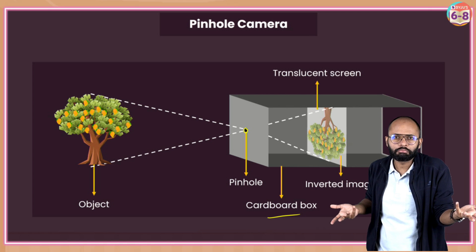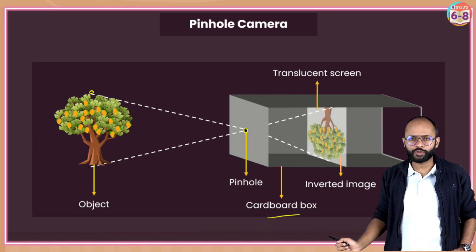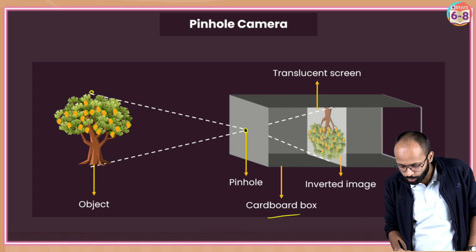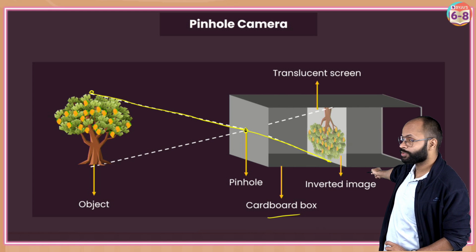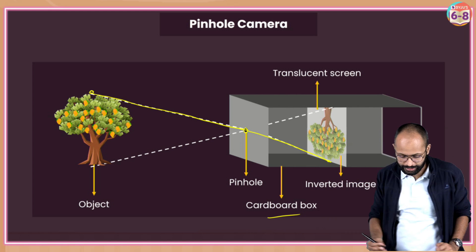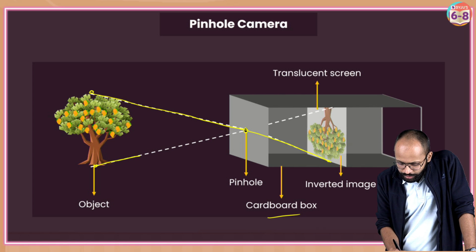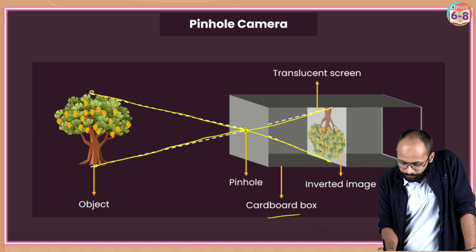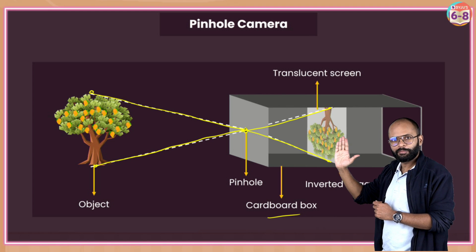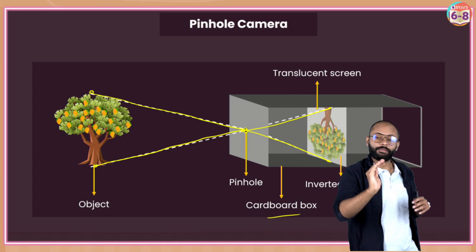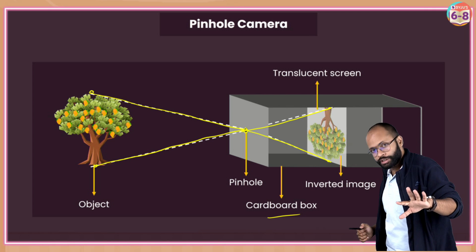What are you trying to see? That is your object - like a tree. The topmost point of the tree: light from that point will go straight, pass through this hole and form an image on the bottom side of the screen. If you take the bottommost point, light is traveling straight through this hole and forms an image on the topmost point of the screen. So the object is like this, but the image is like this - the image is inverted. The pinhole camera forms a smaller, inverted image.